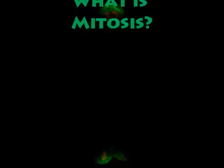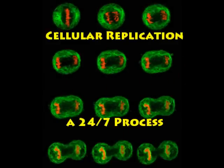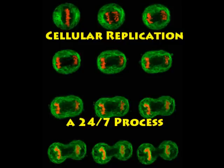What is mitosis? Mitosis is the process of cellular replication. It occurs in all cells in our body, except gametes, which are sex cells — the eggs and the sperm. Examples include skin cells, liver cells, and muscle cells. The end result is two identical daughter cells produced from a single parent cell.